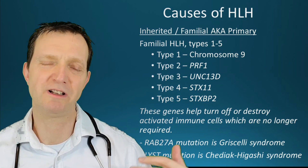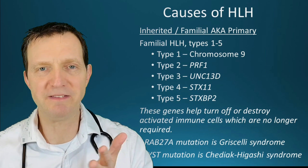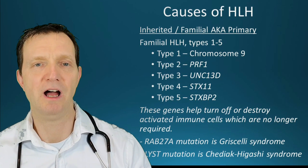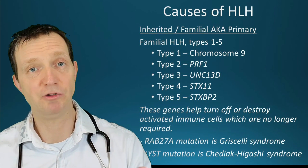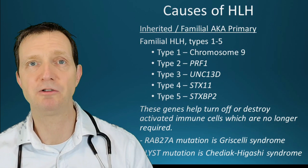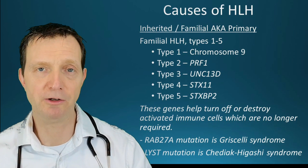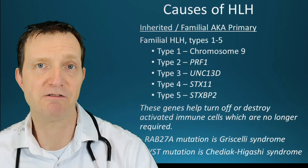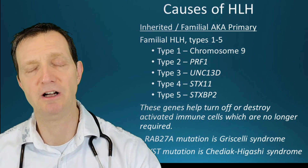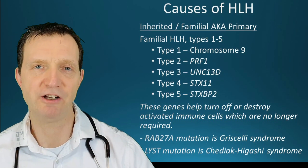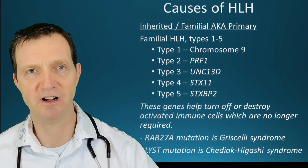So what are the causes? You can split these causes into two: either primary or secondary. Primary is also known as familial — inherited — HLH, and there are generally five types.